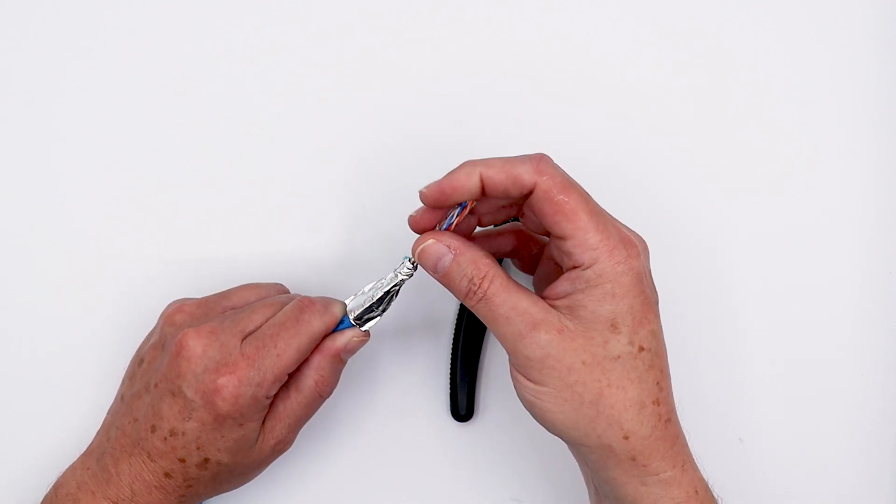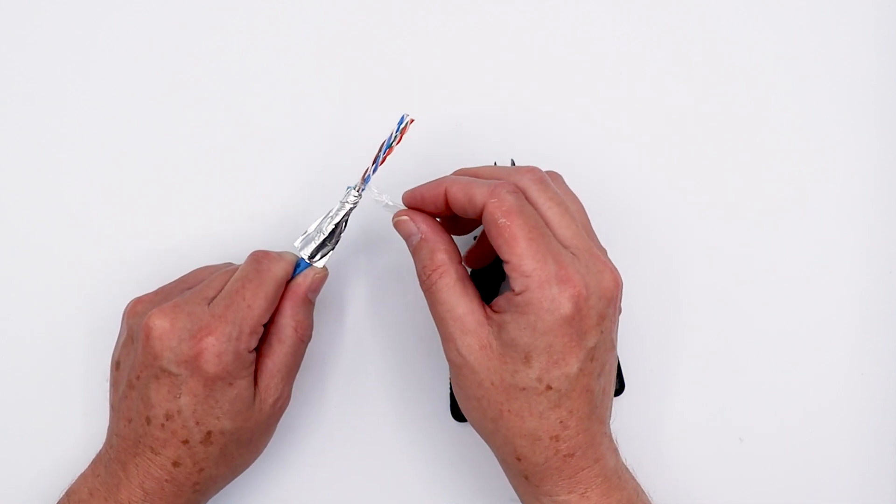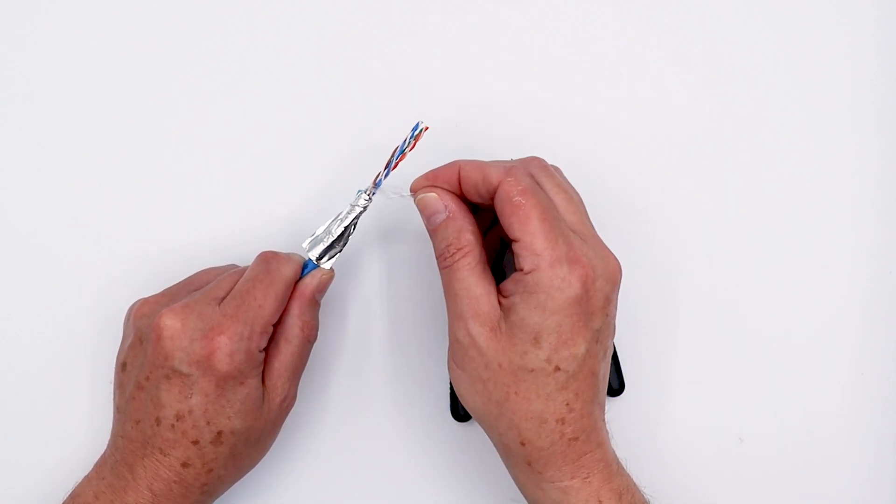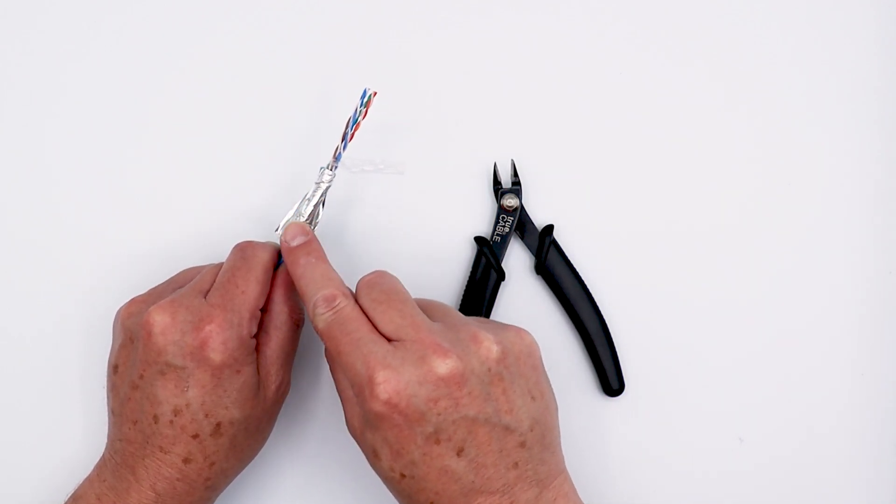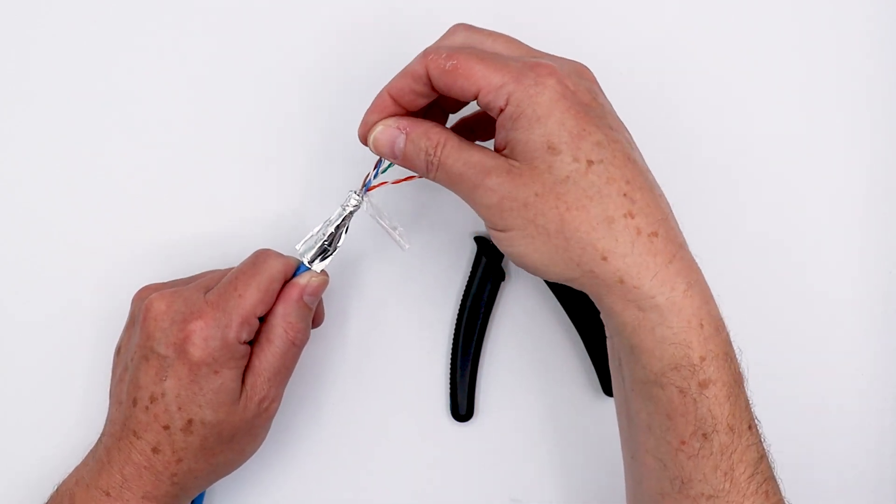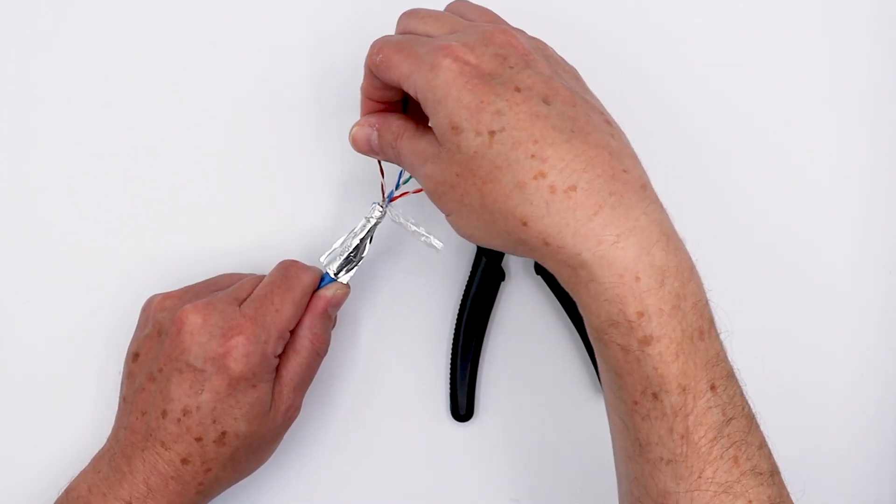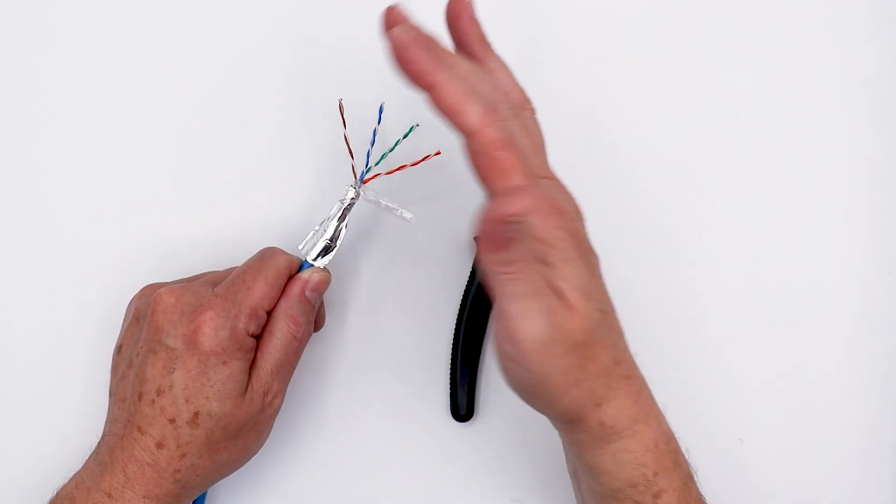In the case of the shielded cable, it may have some additional dielectric wraps like this. When I mean dielectric, I mean non-conducting. That is designed to keep the conductors from actually touching the metal of the shield itself. And then you'll have your typical four pairs, which we had on the other cable. So we got our orange, green, blue, and brown.